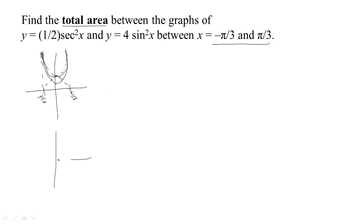Now the sine squared: the sine is 0, climbs to 1 by π/2, and is down to -1 by -π/2. Squaring the sine makes the negative portion positive and flattens values near 0, since squaring small numbers makes them even smaller. We've got 4sin²x, so this is stretched so the maximum height is 4.